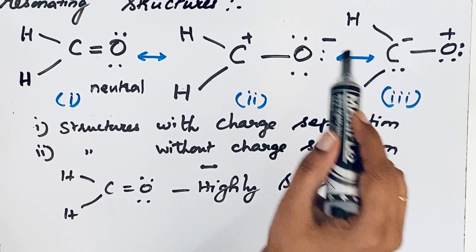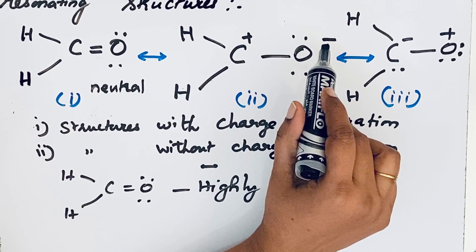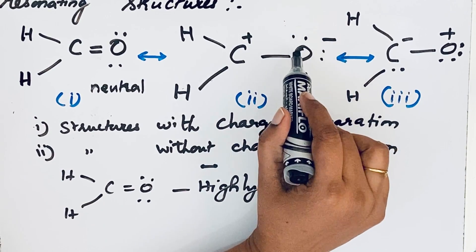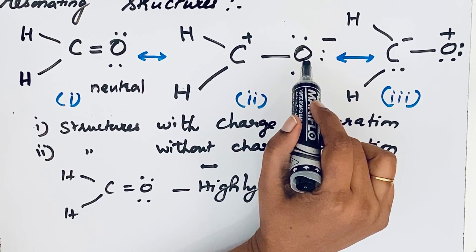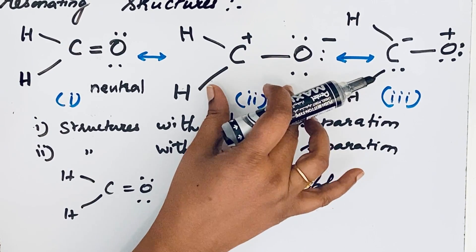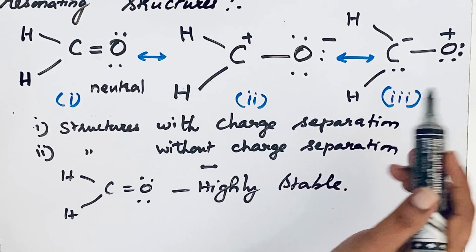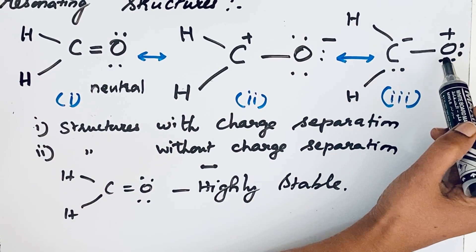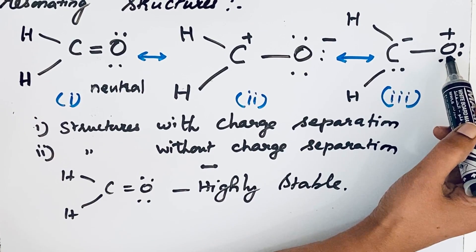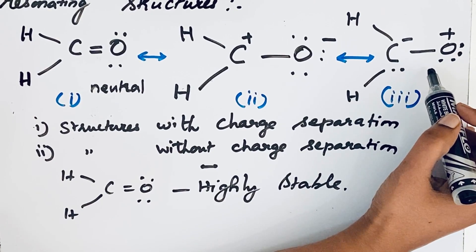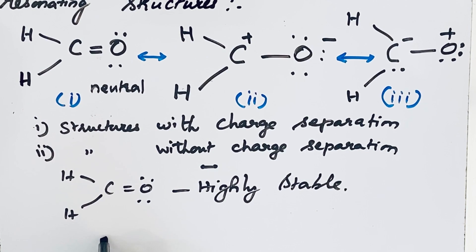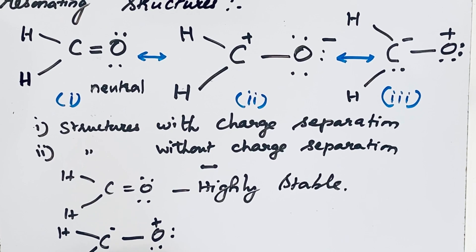Charge separation is preferable when the negative charge is present on the highly electronegative atom. So structure two is more stable than structure three, because in structure three the positive charge is on the highly electronegative element — this is not acceptable. Therefore, structure three is the least stable, because positive charge is present on the highly electronegative atom.